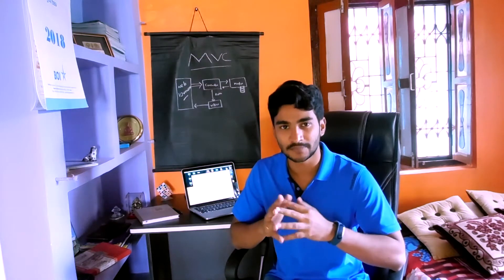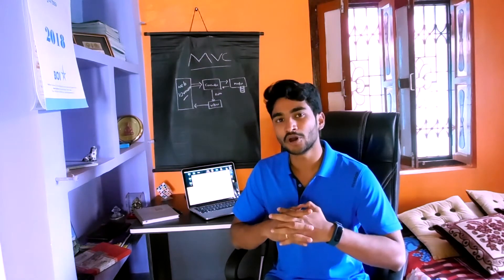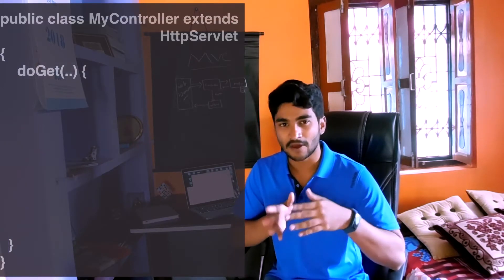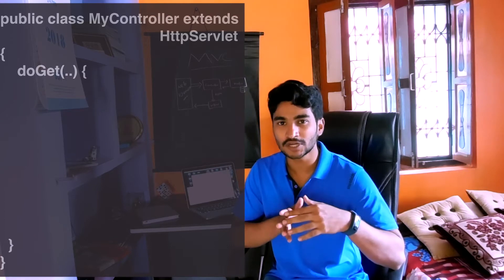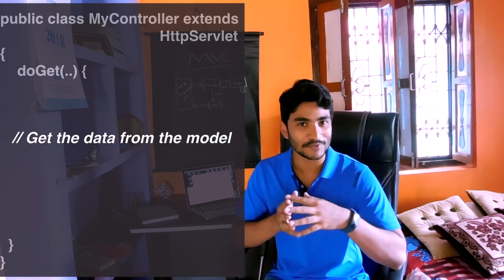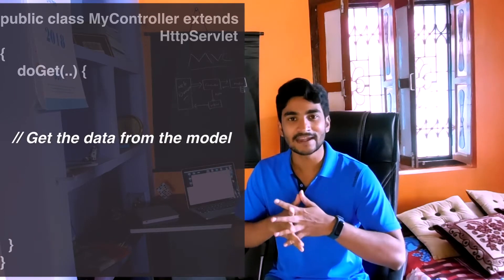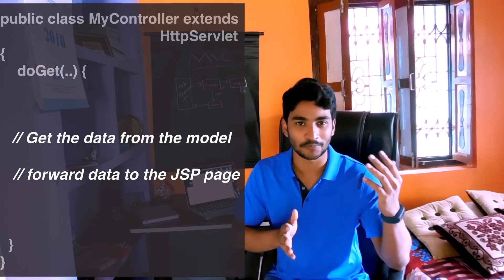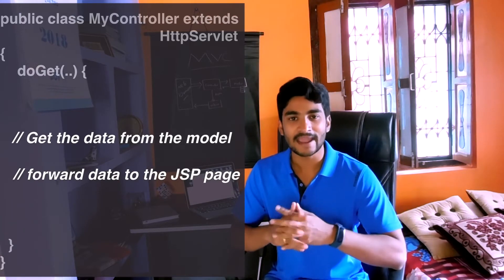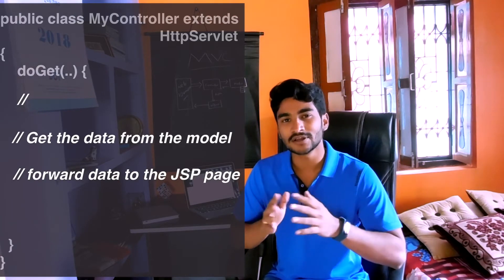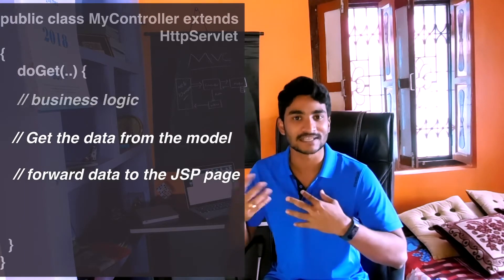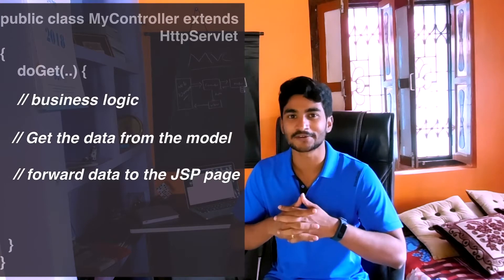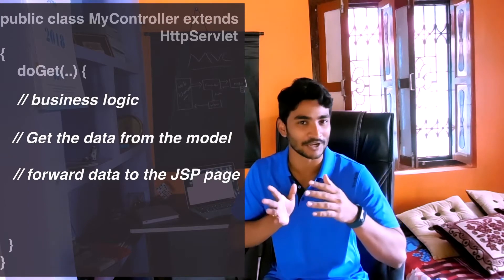Inside our controller servlet we're always going to write this much of code. Our controller is going to talk to the model, get the data from the model, and also send that data to the appropriate JSP page. Inside our controller we can also write the business logic, so if our web application has any business logic, we write it inside our controller.